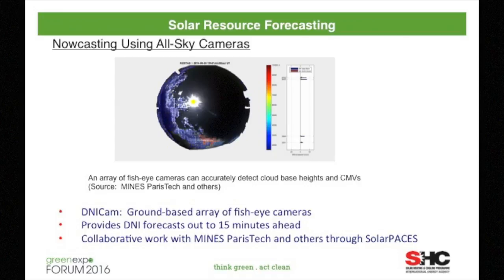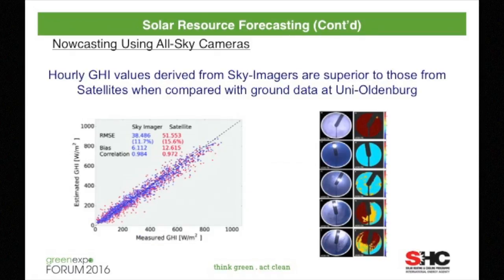Here's an example of the image you would get from an all-sky camera. This is a study being done near some concentrated solar power plants in Spain by Minas Peristec. They have an array of ground-based fisheye cameras that can give you forecasts based on approaching clouds up to 15 minutes ahead. This is a program actually being done in collaboration with the Solar PACES IEA implementing agreement. Another study being done at the University of Oldenburg is looking at how accurately we can estimate solar radiation or incoming solar radiation just from an all-sky camera image. They've developed methods where the estimate of global horizontal irradiance at the ground is quite good based on the technologies produced from all-sky imagery.